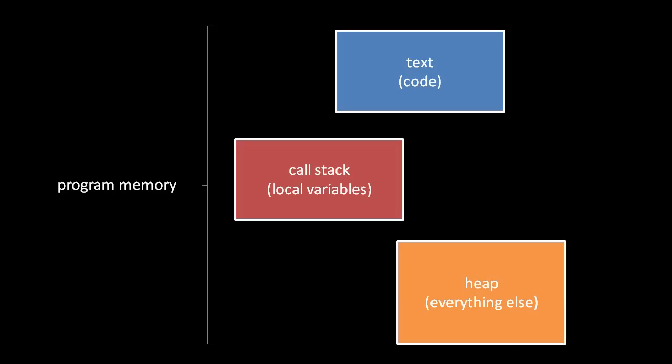In a previous unit, we discussed how the address space of a process is split into three parts: the text section, the stack, and the heap.